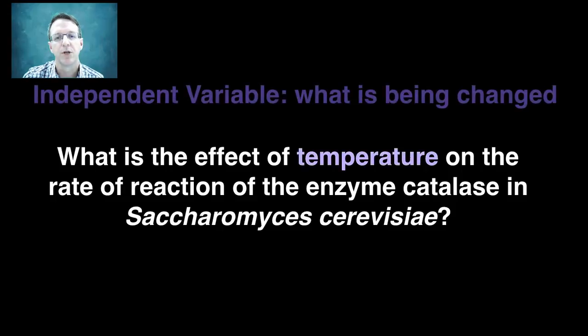When the research question is paraphrased like this, X, or in this case, temperature, represents the independent variable, which is the variable that the experimenter has decided to manipulate or change.